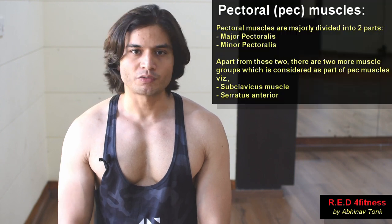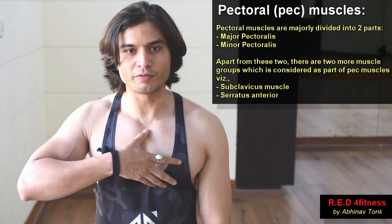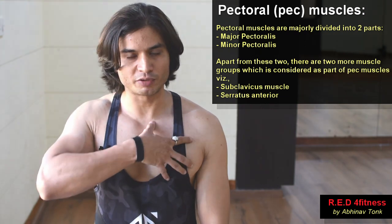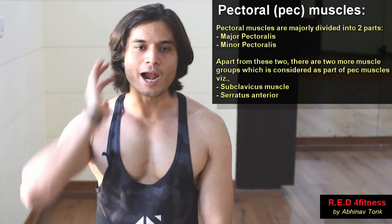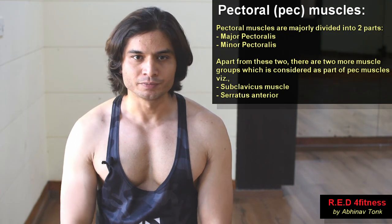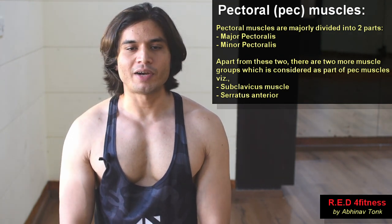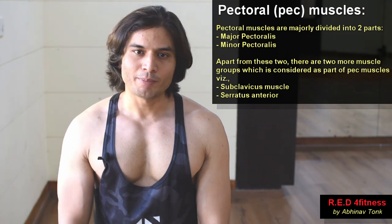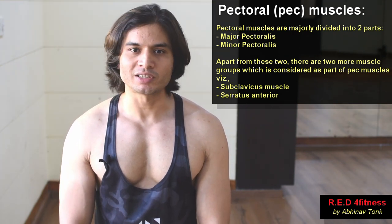The pectoral muscle is basically divided into two parts: the first is the major pectoral and the second is the minor pectoral. The visible portion of the muscle is known as the major pectoral, while the minor pectoral lies beneath it and cannot be seen with the naked eye. The major pectoral is further divided into various heads — 'head' basically means the portion where the muscle originates.